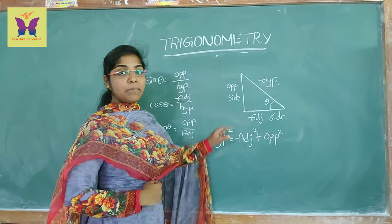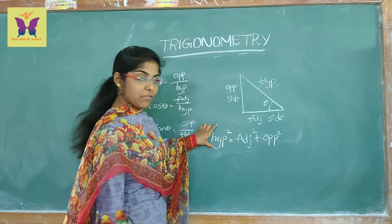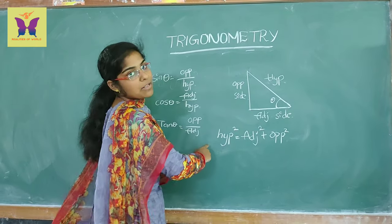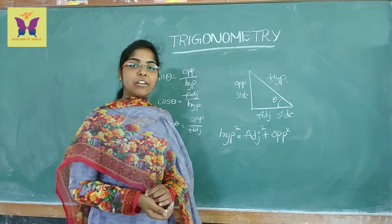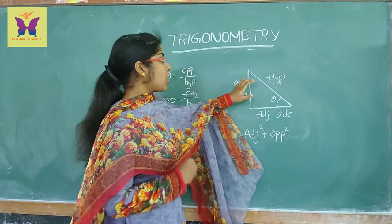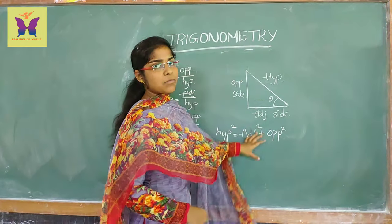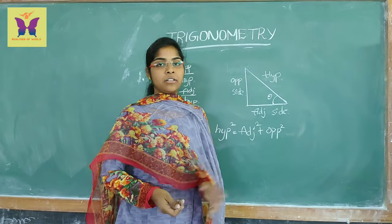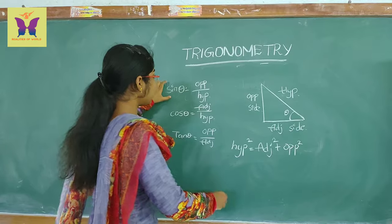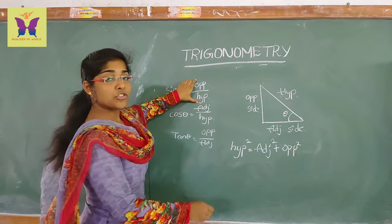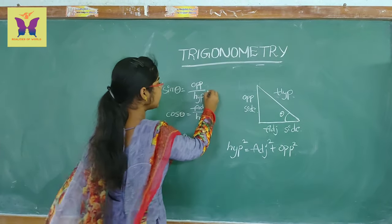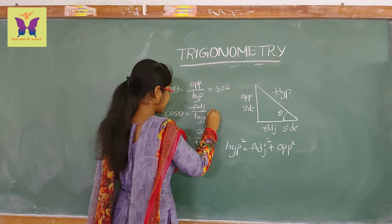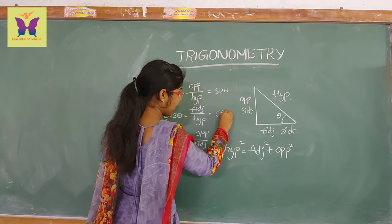This Pythagoras theorem formula is used in trigonometry for theta values. To remember sin theta, use the mnemonic SOH: Sine equals Opposite over Hypotenuse. For cos theta, use CAH: Cosine equals Adjacent over Hypotenuse. For tan theta, use TOA: Tangent equals Opposite over Adjacent.